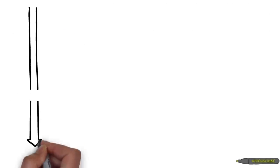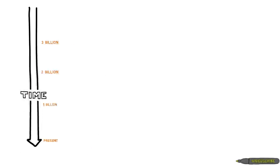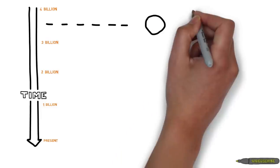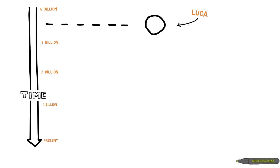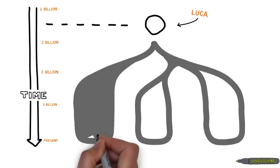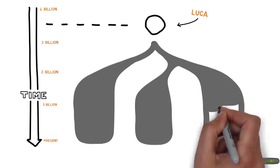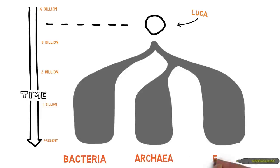Microbes are the oldest form of life on Earth, dating back to about 3.5 billion years ago. This far back in time, we find a population of microbes that were the last universal common ancestors of all life on Earth. From this common ancestor arose three domains by which we classify all of life: bacteria, archaea, and eukarya.